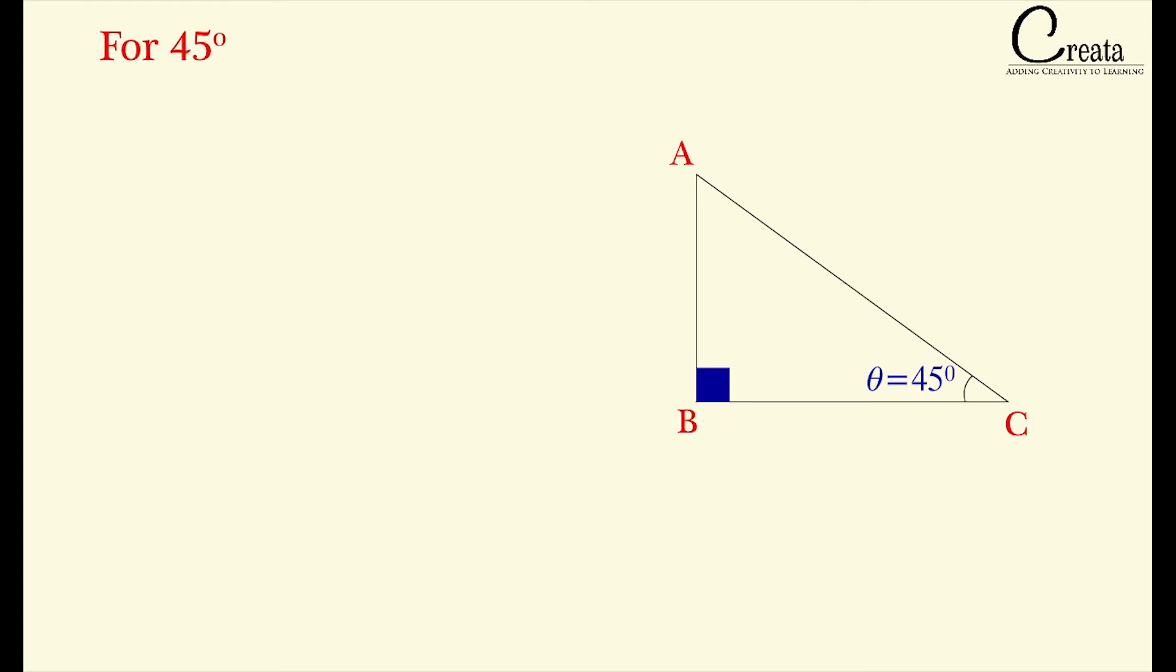Here angle B is 90 degree. We can calculate angle A as 180 degree minus 90 degree minus 45 degree, that is 45 degree. Now we know all the three angles. Let's mark the three trigonometric sides of the triangle: base, perpendicular and hypotenuse. Refer lecture 1 if you are unable to mark the three trigonometric sides.